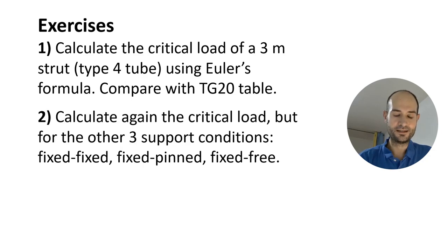So now just a couple of exercises so you can practice at home. Number one, calculate the critical load of a 3 meter strut, a type 4 tube, using Euler's formula and compare your result with TG20's table. And two, calculate again the critical load using Euler's, but for the other three support conditions: fixed-fixed, fixed-pin, and fixed-free.